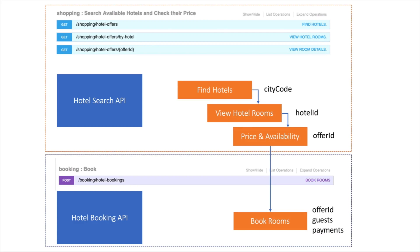The next step, when you have selected the hotel you're interested in, is to get the list of all the rooms and offers available in that specific hotel. This is the purpose of the second endpoint: View Hotel Rooms. You give a hotel ID and the API returns the list of all the offers for that specific hotel. An offer is basically a room mixed with a package — rooms for two, four, or six persons, deluxe rooms, and so on. For the same room you can have different packages: free cancellation included or not, breakfast included or not. So the purpose of this endpoint is to give you all the different offers available for that hotel.